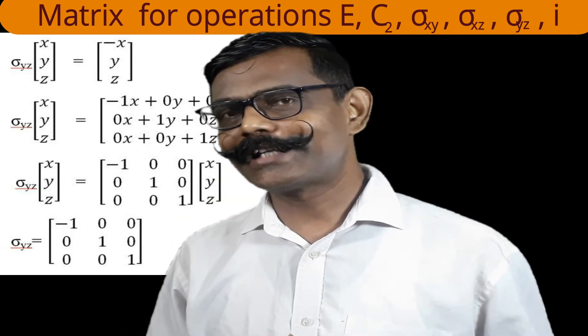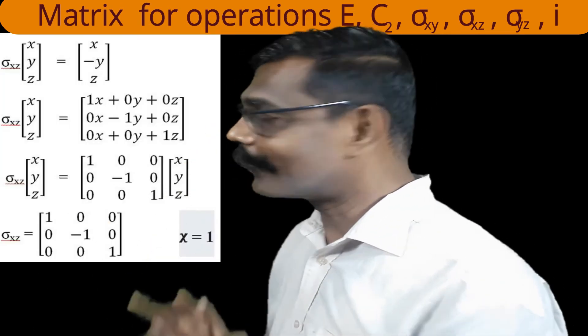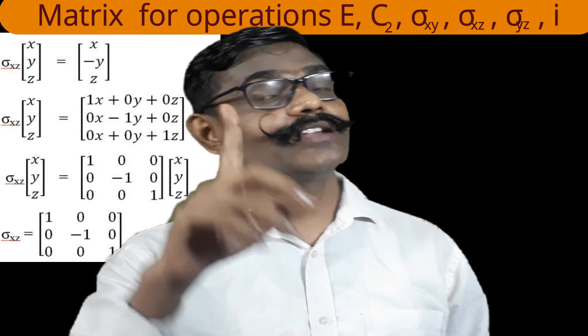Now, the last basic plane: the x-z plane. In the x-z plane, y is not present. If a point is on your side, it will come to my side after reflection. X coordinate will not change. Y coordinate will become negative. Z coordinate will not change. So new coordinates are x, −y, z. The matrix for sigma(xz) is [1,0,0; 0,−1,0; 0,0,1]. Again, the character is 1.